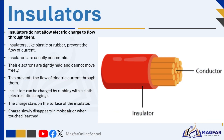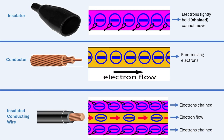On the other hand, insulators are materials that do not allow electric current to flow. These are usually non-metals, and their electrons are held tightly by the positive nuclei inside their atoms. Because the electrons are not free to move, they cannot carry charge through the material, and so no current flows when an insulator is connected in a circuit.